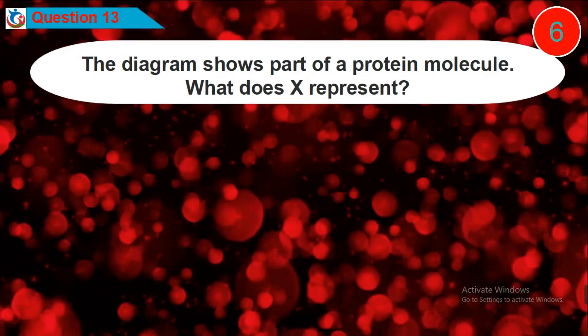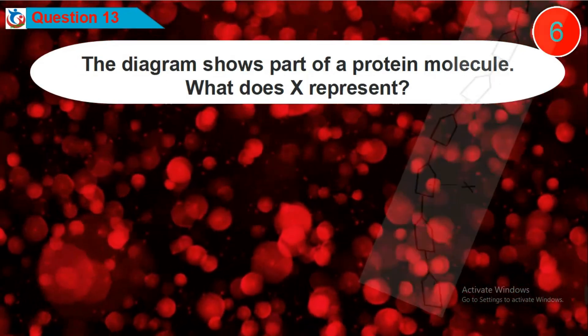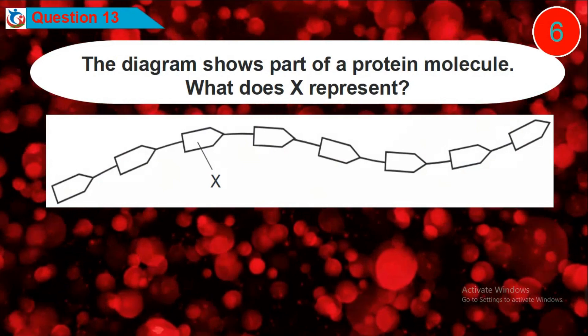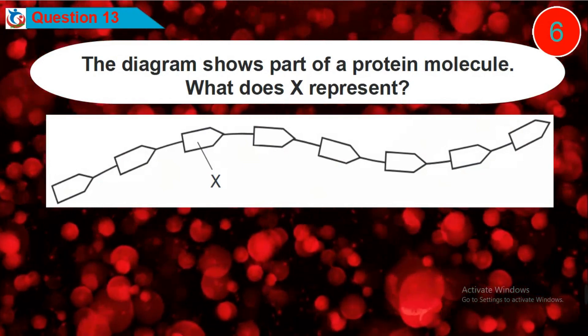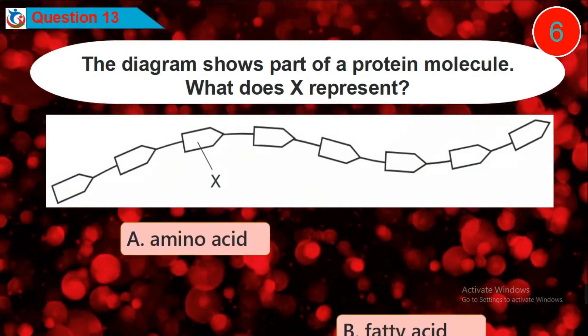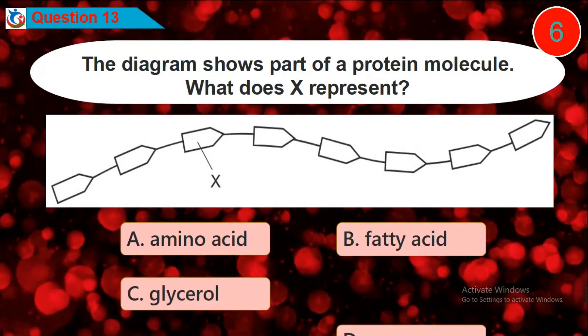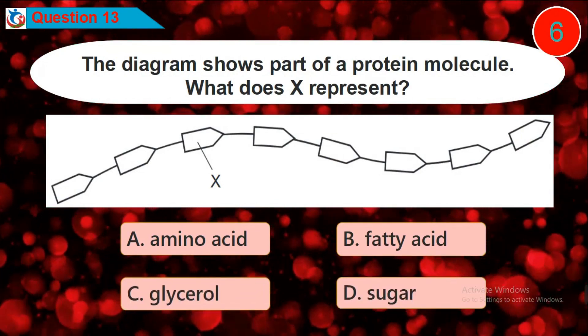Question 13: The diagram shows part of a protein molecule. What does X represent? Is it option A, B, C, or D?